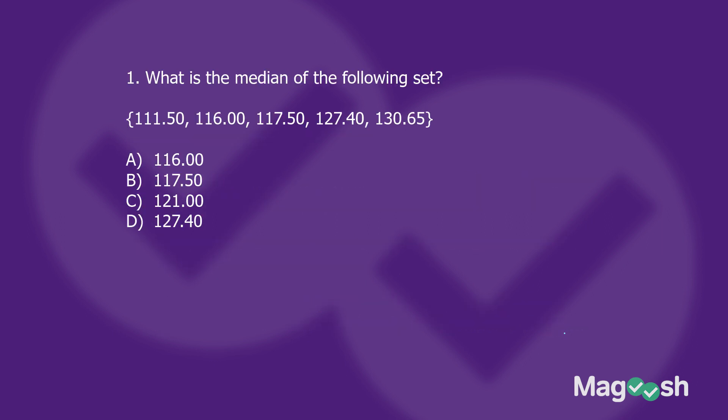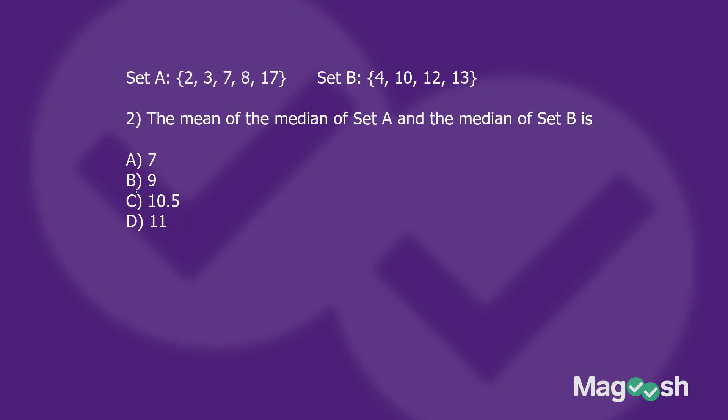Let's try a couple of practice problems. What is the median of the following set? It's asking for the middle number. The numbers are arranged from lowest to highest, so we just look for the middle number, which is 117.5. Not a hard question, but now you know what median means — let's try a harder one.